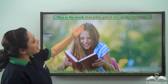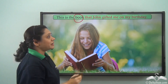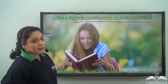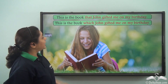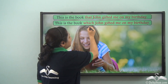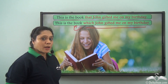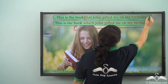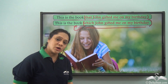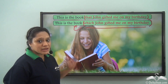Consider: 'This is the book that John gifted me on my birthday.' The noun 'book' is being described by the clause 'that John gifted me on my birthday.' We could also say 'which John gifted me on my birthday.' Both 'that John gifted me on my birthday' and 'which John gifted me on my birthday' are describing the noun 'book,' so they are adjective clauses.